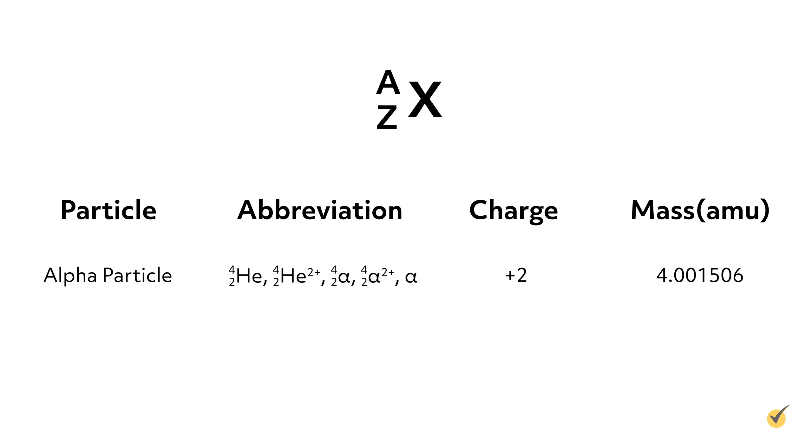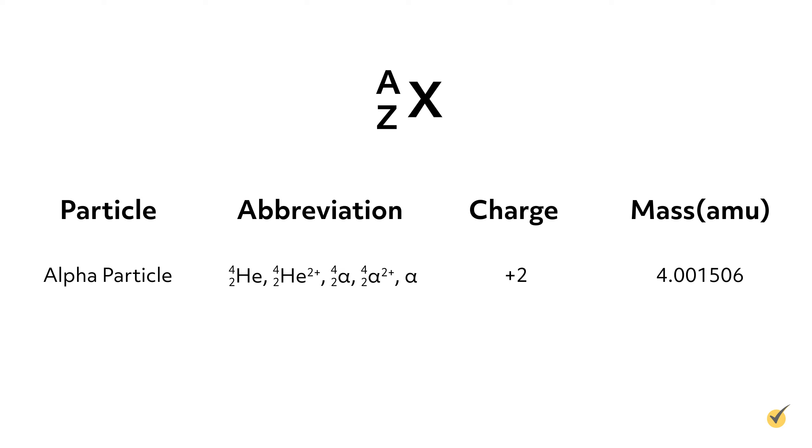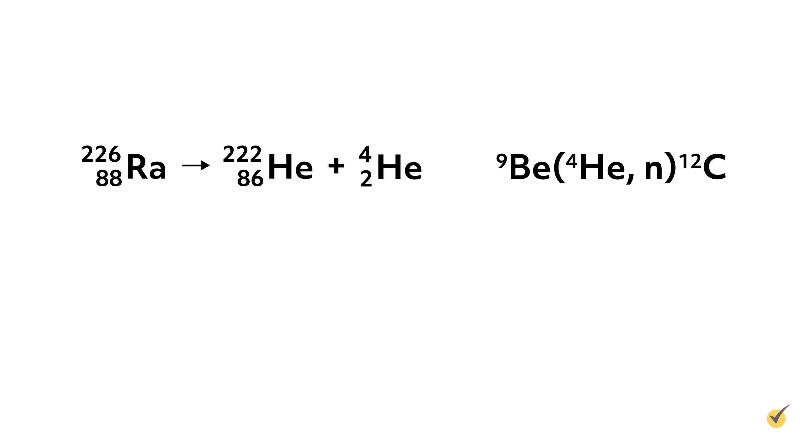Alpha particles are high-energy helium-4 nuclei, two protons and two neutrons. They have been stripped of their electrons, so they carry a positive 2 charge. They can be written as 4-2 helium-2 plus, but are often abbreviated to simply alpha. Thus, returning to our previous examples, we now know that 4-2 helium is an alpha particle. So the first reaction would be written like this and is commonly referred to as the alpha decay of radium. The second reaction would be written like this and be read as: Beryllium was bombarded with alpha particles to produce carbon and high-energy neutrons.